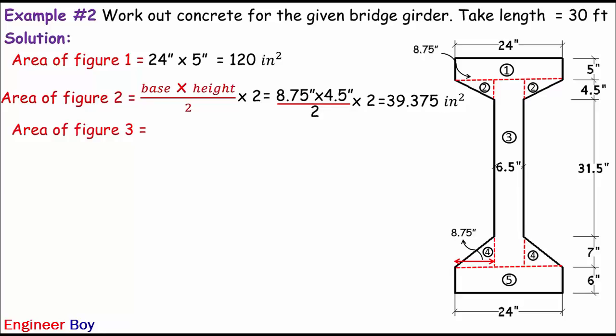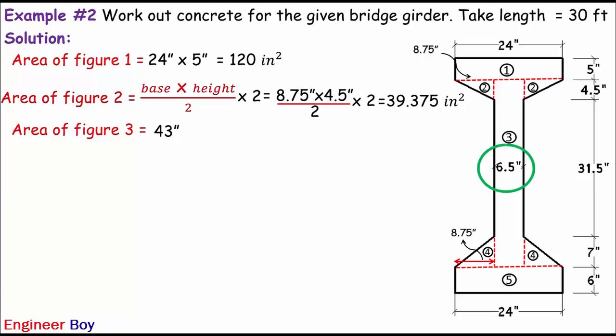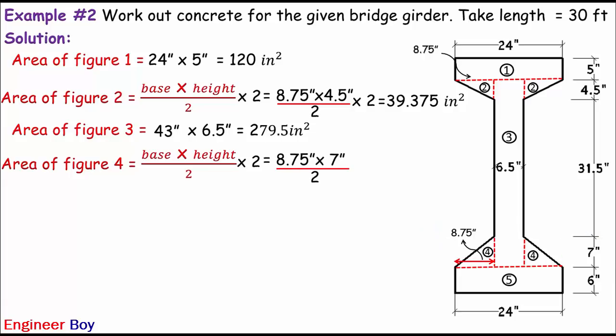Area figure three is its total height — 43 inches, which is the sum of 4.5 + 31.5 + 7 inches — times its thickness or breadth of 6.5 inches, giving area figure three equals 279.5 square inches. Figure four is also a right-angle triangle, and there are two of them. Area figure four equals 8.75 inches times 7 inches divided by 2, times 2, giving 61.25 square inches.